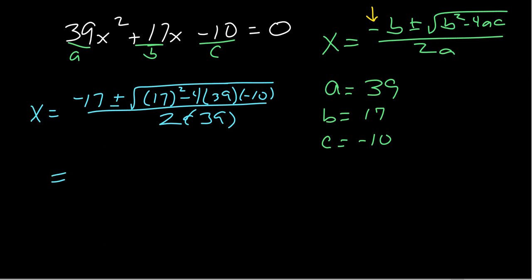Now just grab up your calculator at this point. My advice to you just to take things nice and simple is work through the radicand, what's under the square root first. So I'm getting negative 17 plus or minus 1849 over 2 times 39, which would be 78.